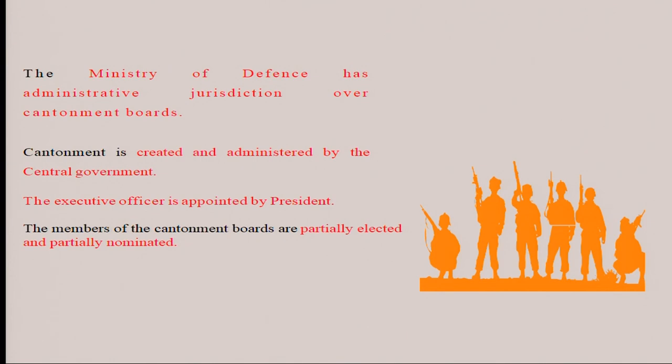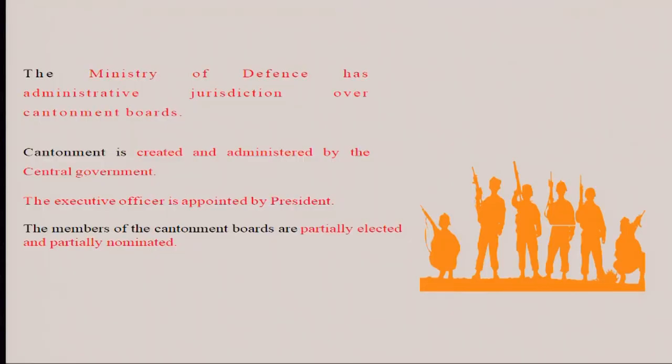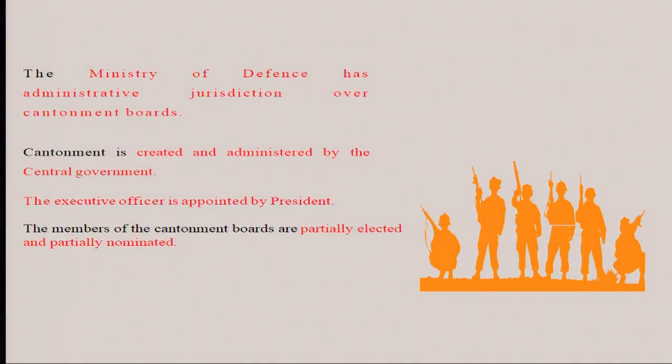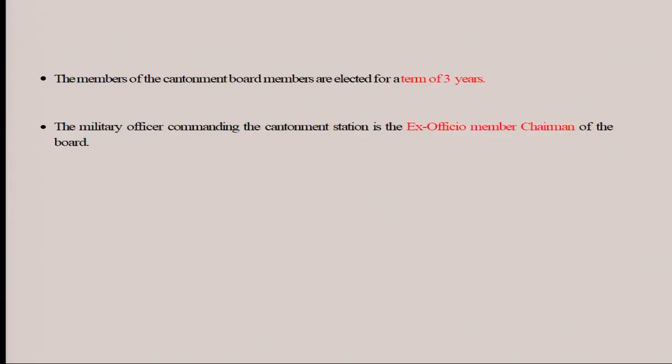The executive officer of the cantonment — the head — just as the town administrator is appointed by the public sector enterprises for the township, likewise the executive officer for the cantonment board is also appointed by the President. This cantonment board is like port — they will be having elected as well as nominated members. Both types of members will be there, whereas in township it is not there. Port and cantonment board both have elected as well as nominated members. Their tenure is 3 years. The military officer commanding the cantonment station is called the ex-officio member chairman of the board.